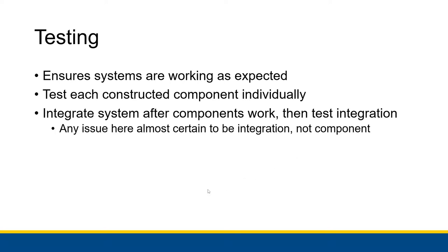Once every unit has been tested and everything is working correctly by itself, you integrate the systems together and then test the integration itself — you test the whole system. At this point, any issue is almost certain to be due to some mismatch in the integration of all the different components, not within the components themselves. So you test the components, make sure the components are working the way you want, and then you test the system as a whole. If you have issues when testing the system as a whole, it's probably an issue in how you put the pieces together.